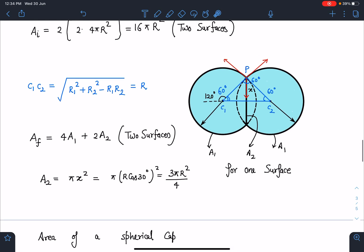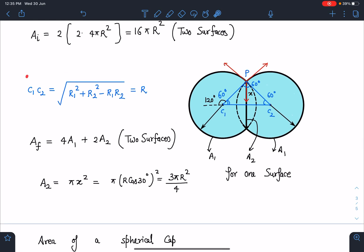Now very recently I published a video on distance between the two centers and that result was a general result. The value was √(R₁² + R₂² - R₁R₂). If I substitute the value R₁ is R, R₂ is R, I am going to get C₁C₂ as R.